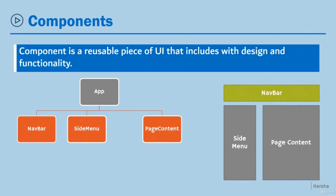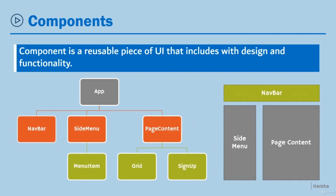Each component can have children. For example, the side menu has menu items, and page content may have a grid or signup page — and of course these components are also reusable. As you keep nesting components, the component hierarchy will be formed, where the app is the ultimate root or parent-level component.